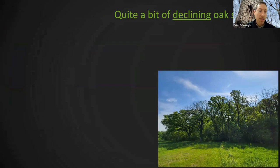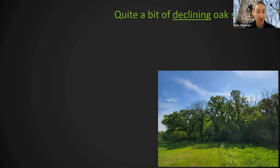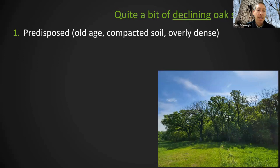Decline is an important concept to bring up here. It's complicated when looking at why trees and forests are dying — it's not easy like diagnosing what's killing a corn plant. These trees are really complex organisms that are difficult to study and investigate. Decline has three components: first, forests or trees need to be predisposed to decline. Things that predispose trees include old age, compacted soils, and overly dense forests where trees compete for water and light resources.